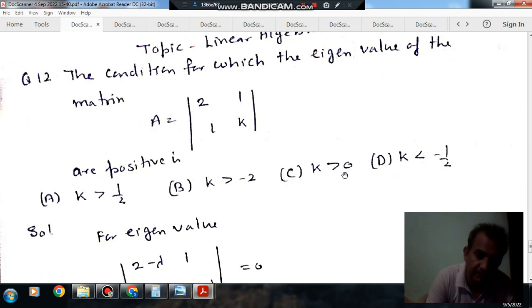Option C, K greater than 0. Option D, K less than -1/2.